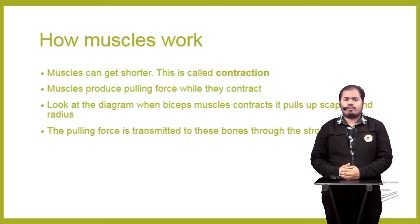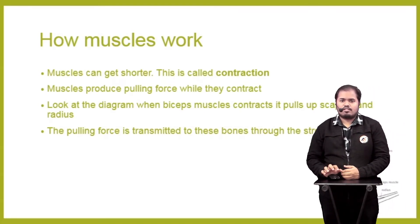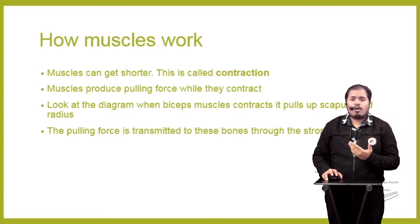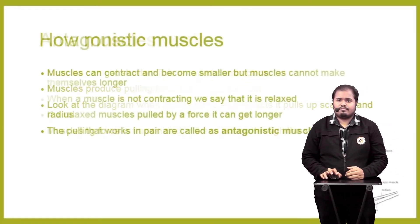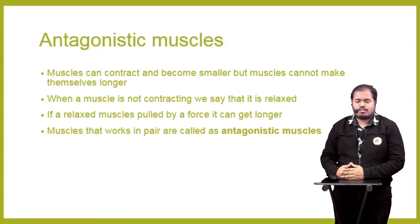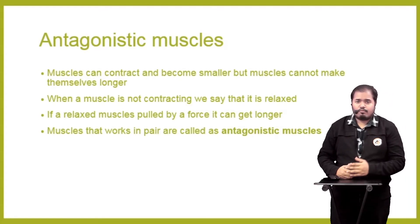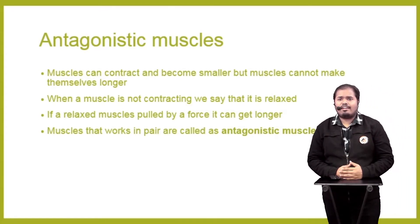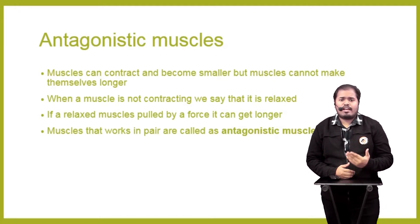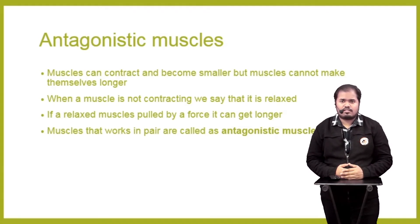For example, when I contract my bicep muscles to raise my forearms up, the pulling force is transmitted to the bones through the strong tendons. This is how your bone moves up or down. The type of process we see with the biceps and triceps is called antagonistic muscles.